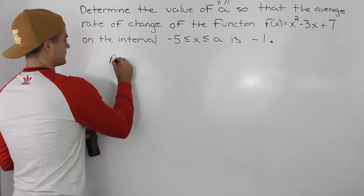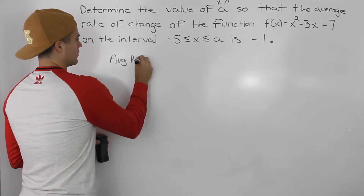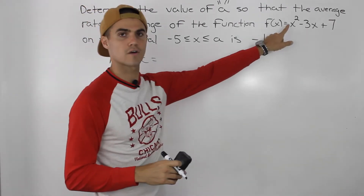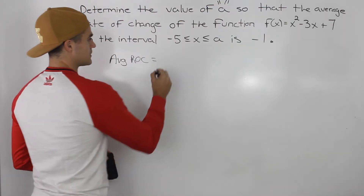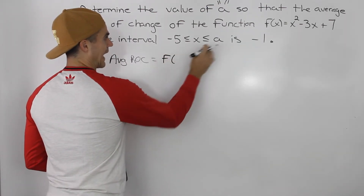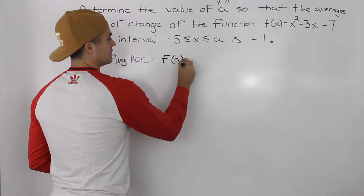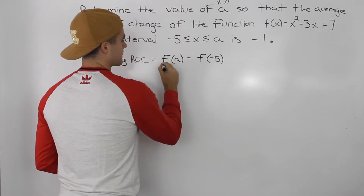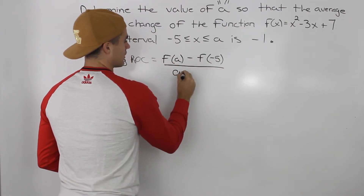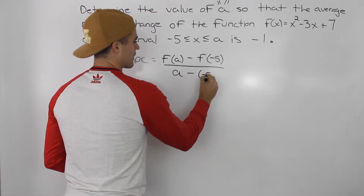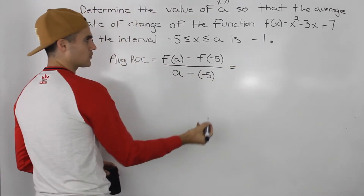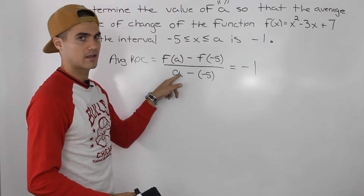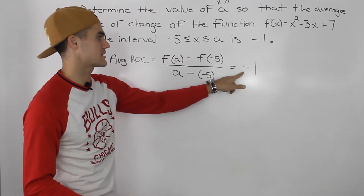So the average rate of change is going to be the slope of the secant between these two points for this function. It's going to be the value of the function at point a minus the value of the function at x = negative 5, all over a minus negative 5, and this is going to equal negative 1.